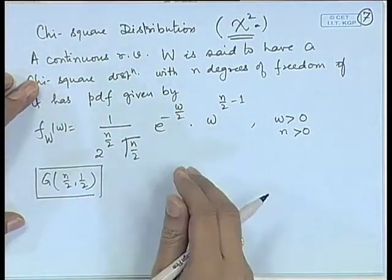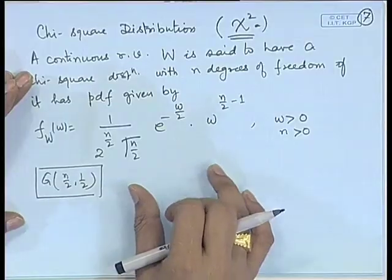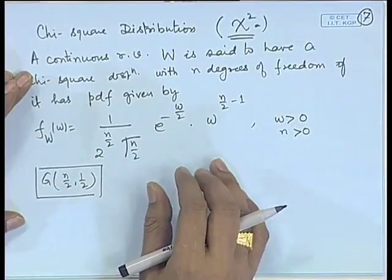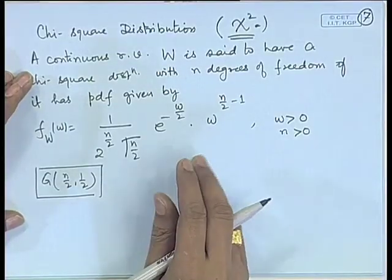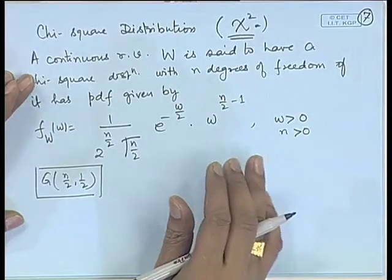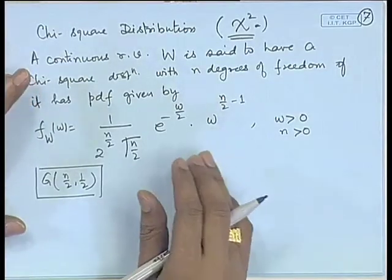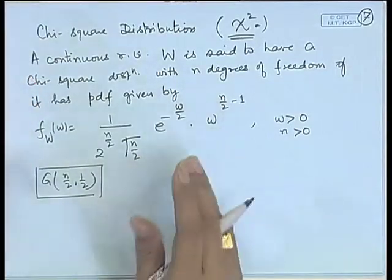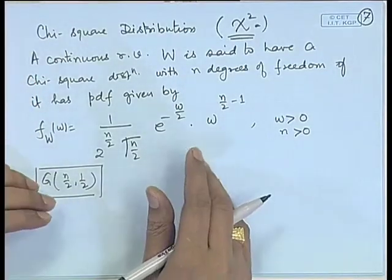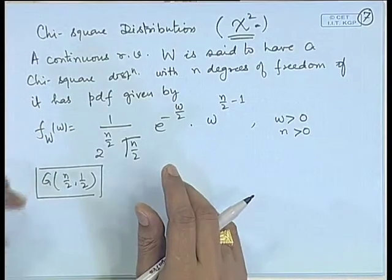So why are we calling it a sampling distribution? We will show that this distribution arises in sampling from a particular population — that means we have certain characteristics for which this will be the distribution.